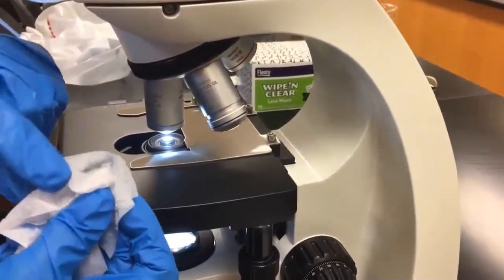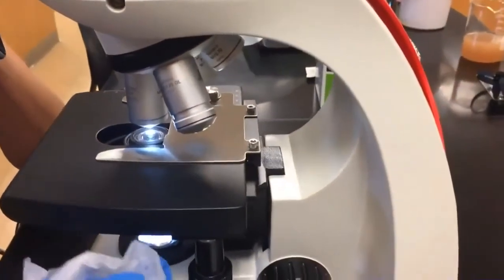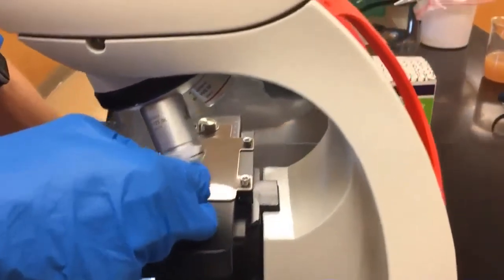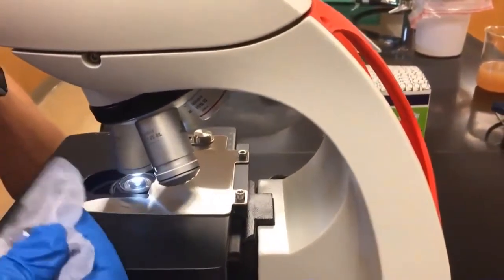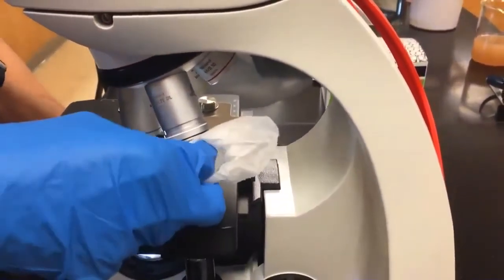If you see oil on the paper, that means you're not done. So always finding a clean place on the lens paper, wipe the oil. I still have some oil, so you keep wiping until all the oil is gone.